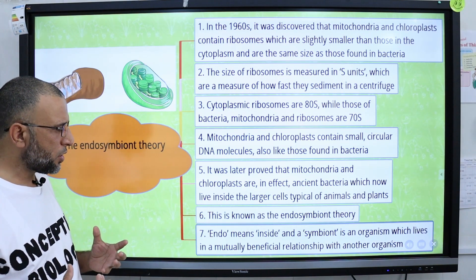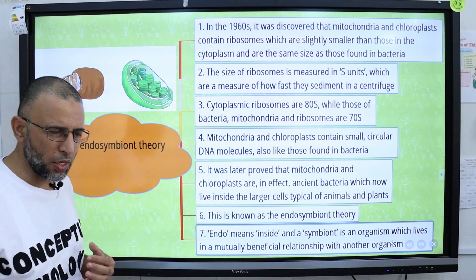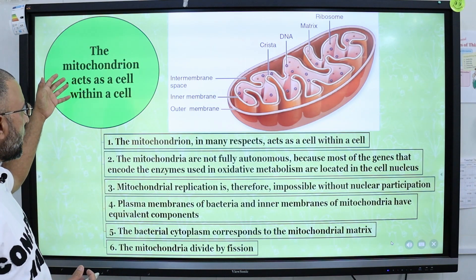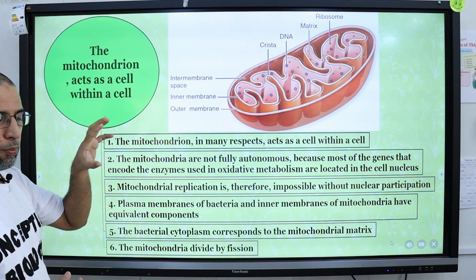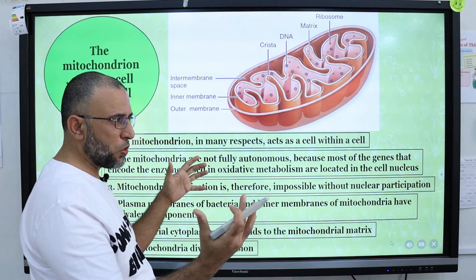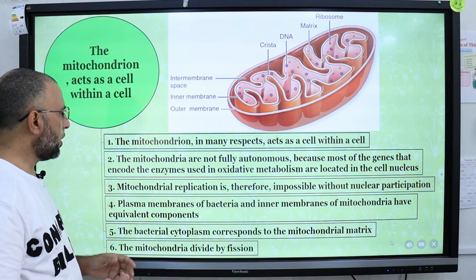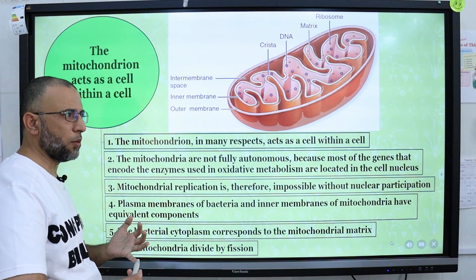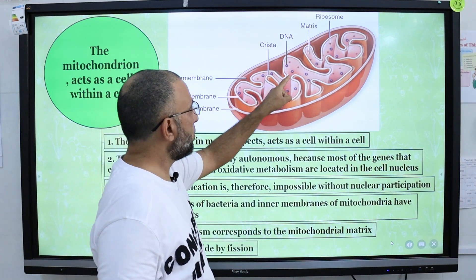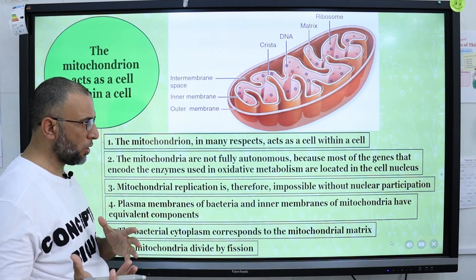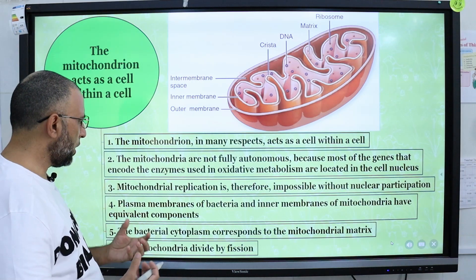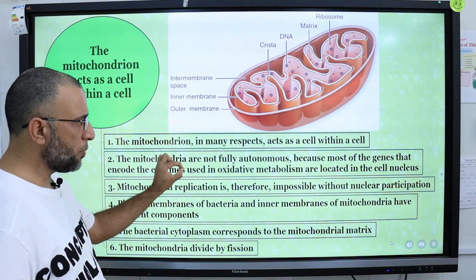Endo means inside, and a symbiont is an organism that lives in a mutually beneficial relationship with another organism. Mitochondria present in eukaryotic cells act as a cell within a cell. Mitochondria have similarity with prokaryotic cells like bacteria — regarding their ribosomes, their inner mitochondrial membrane (which resembles the bacterial cell membrane), and their mitochondrial matrix (which resembles bacterial cytoplasm). However, mitochondria are not fully autonomous structures, because the replication of mitochondria requires certain enzymes whose codes are located in the nucleus.